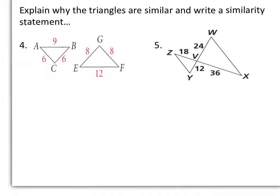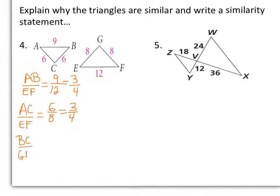Two more examples determining why our triangles are similar and writing the similarity statement. In number 4, we need to find our similarity ratio. I can say AB is to EF, so we have 9 to 12, which reduces to 3 to 4. We can also say AC is to EF, so 6 is to 8, which reduces to 3 to 4. And BC is to GF, so again 6 to 8, or 3 to 4. So 3 fourths is our similarity ratio. Our two triangles are similar by the SSS, or side-side-side similarity. Triangle ABC is similar to triangle EFG.